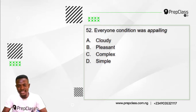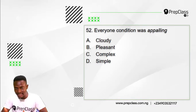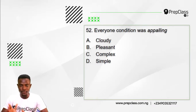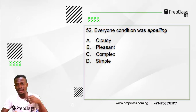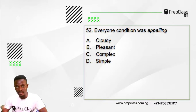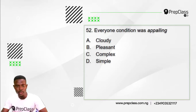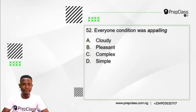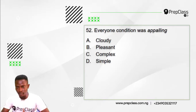Moving on to question 52. Remember we are to select the option opposite in meaning to the word or phrase in italics. Question 52 reads: everyone's condition was appalling. The word in italics here is 'appalling.' Which option is opposite in meaning to 'appalling'? Option A: cloudy. Option B: pleasant. Option C: complex. Option D: simple.